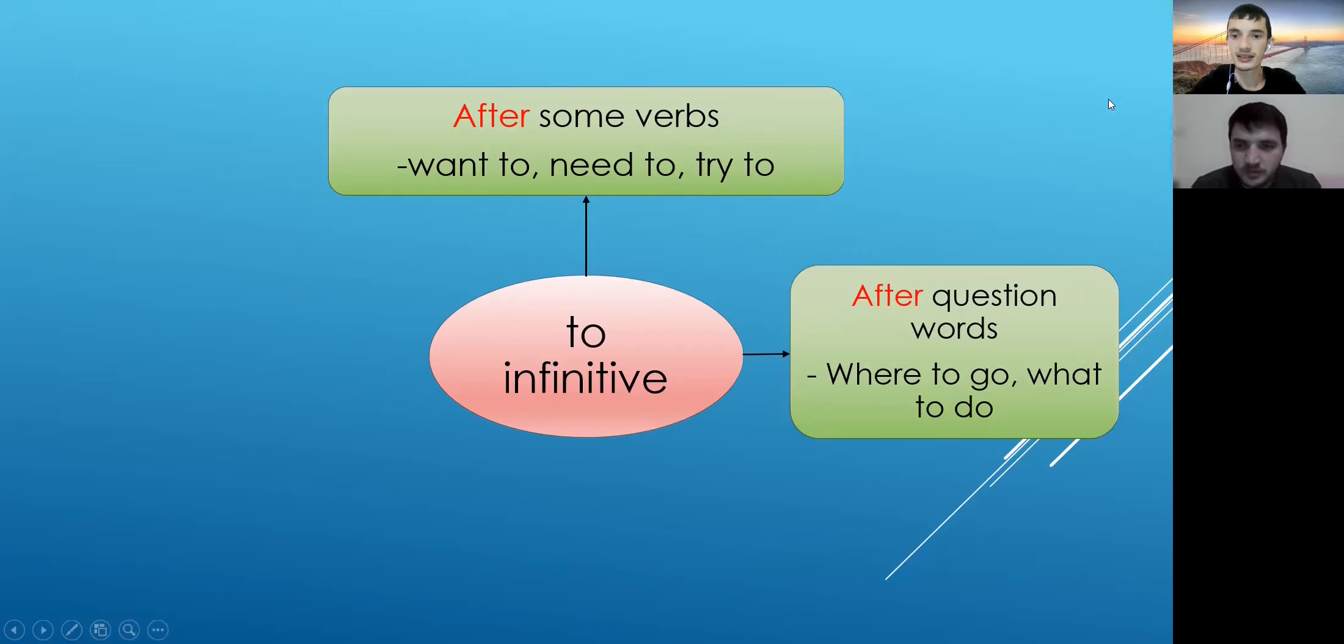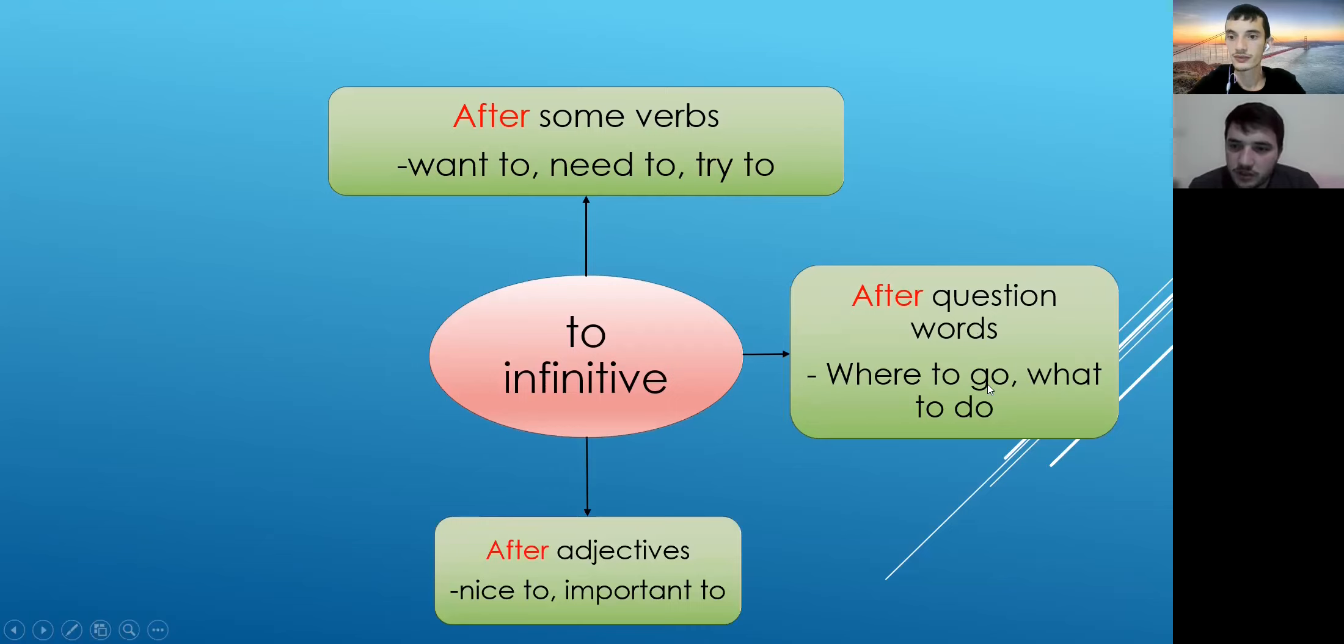Let's see the next rule. What is it? After question words: where to go, what to do. Exactly. So when we have question words, what are our question words here? Where and what, exactly. After some question words we use to infinitive, like you have your verb here: where to go, what to do, right?